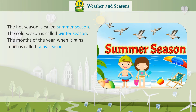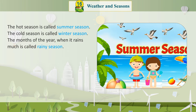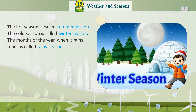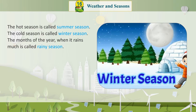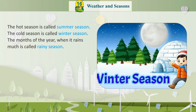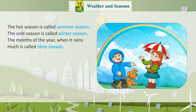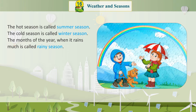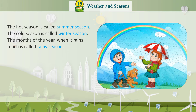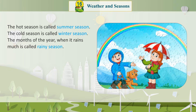The similar type of weather for many days is called a season. The hot season is called summer season. The cold season is called winter season. The months of the year when it rains are called rainy season.